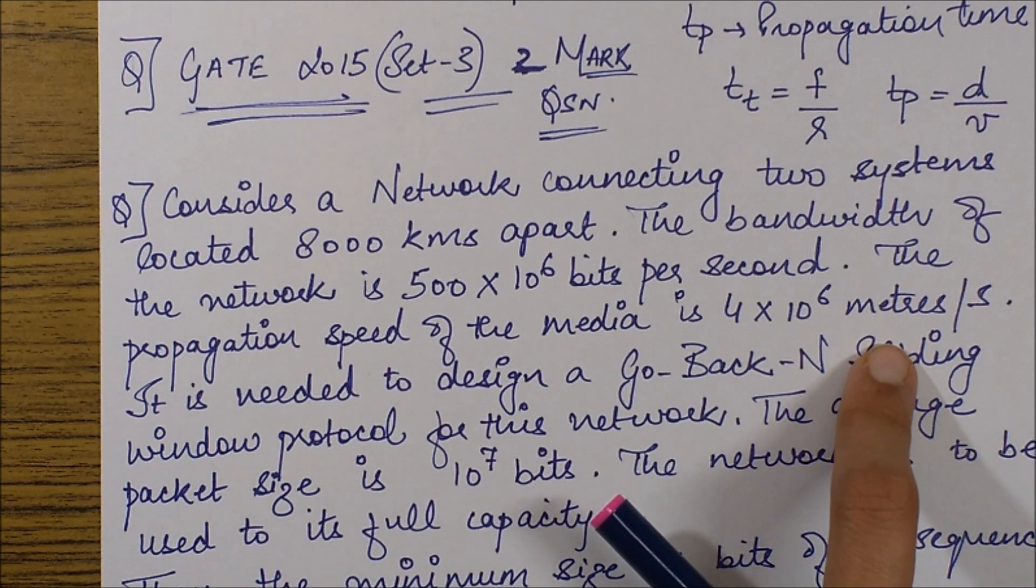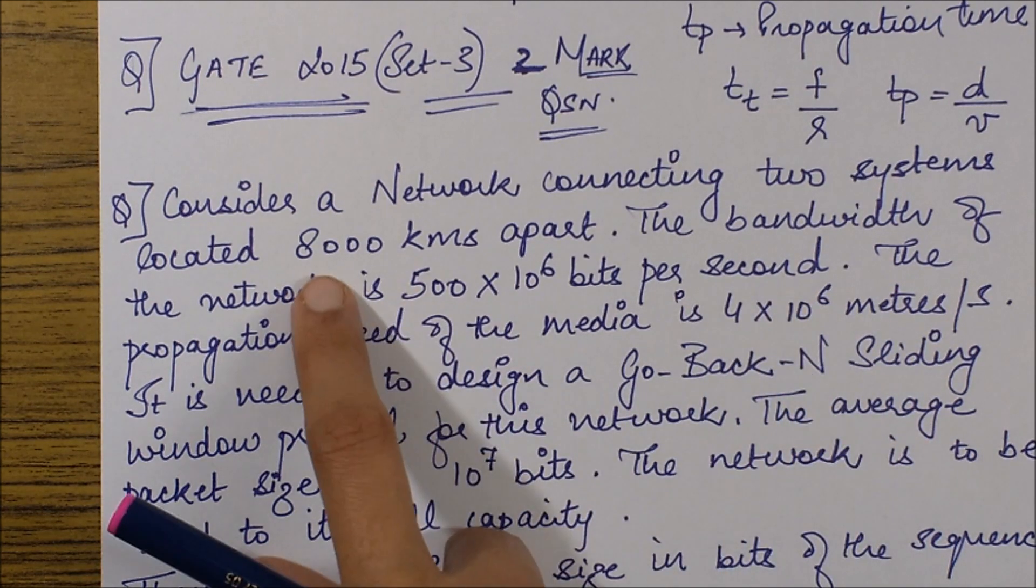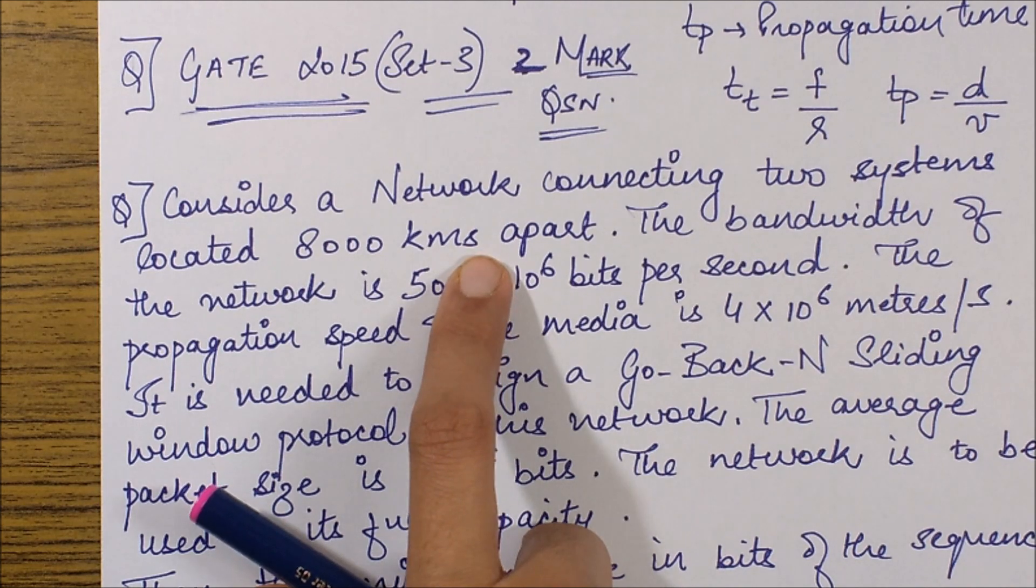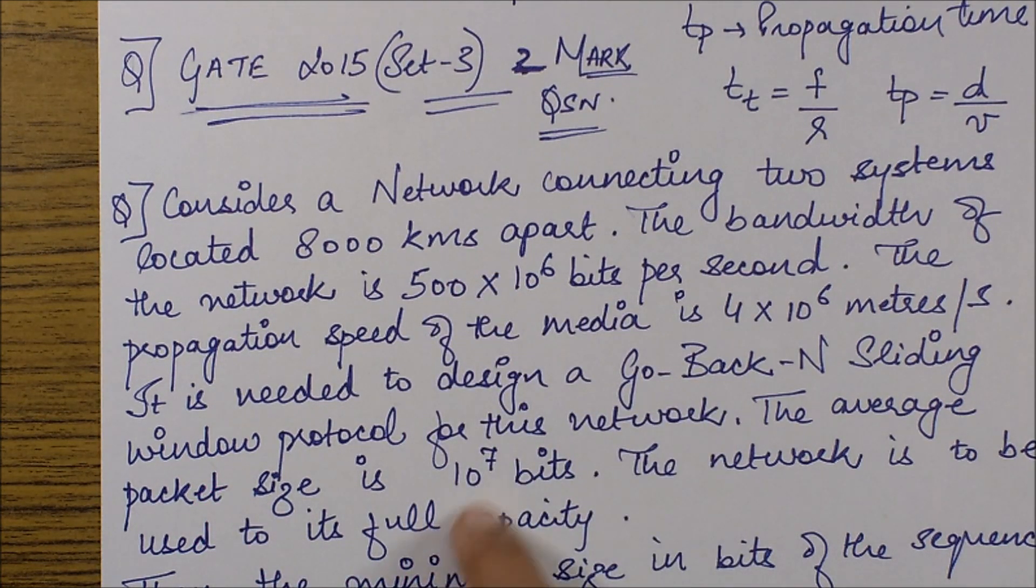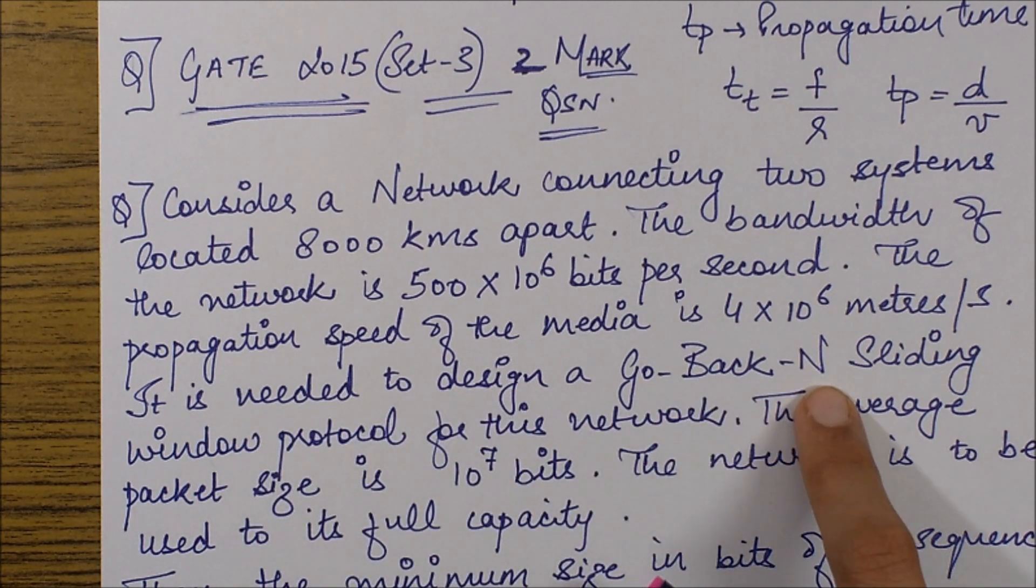This is the propagation speed, not the propagation time. Please note the units are meters per second—that means it's the speed or velocity, not the time. We'll have to find out the time. Since we've already been given the distance, we can easily compute the time, which I'll be doing after reading the entire question.